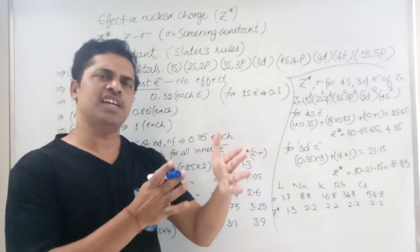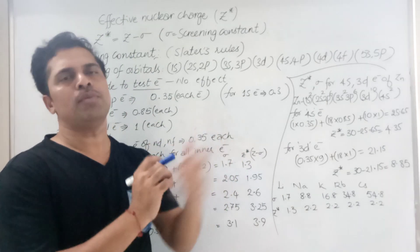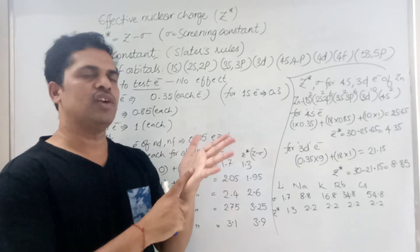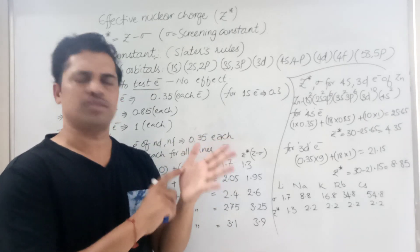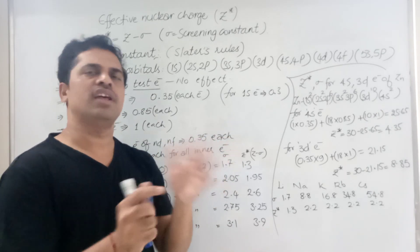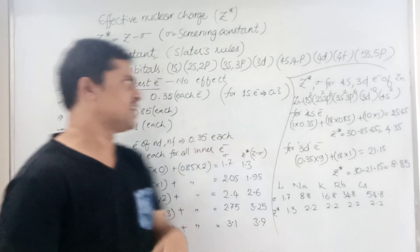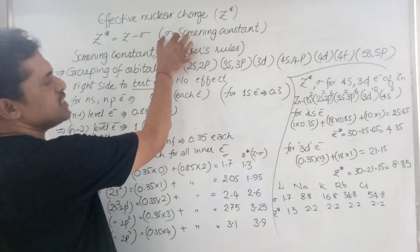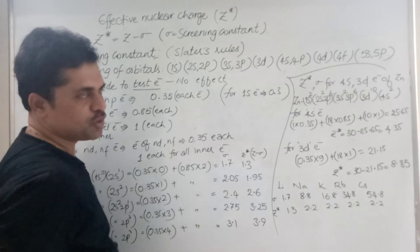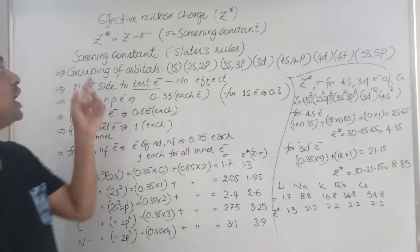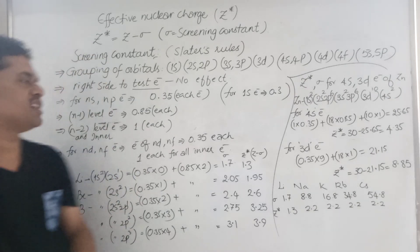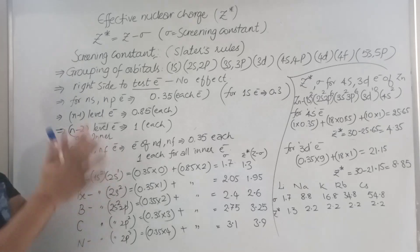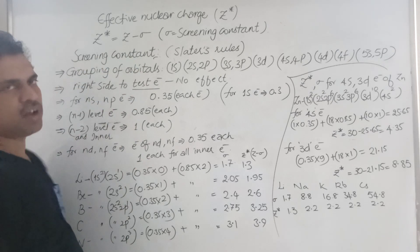Everything important here is about the screening constant — that means how to find out the screening constant and its values. For this, there are some rules given by Mr. Slater. Screening constant is sigma, and these are called Slater's rules. How to calculate the screening constant? First of all, we have to group the orbitals — that we call grouping of orbitals.